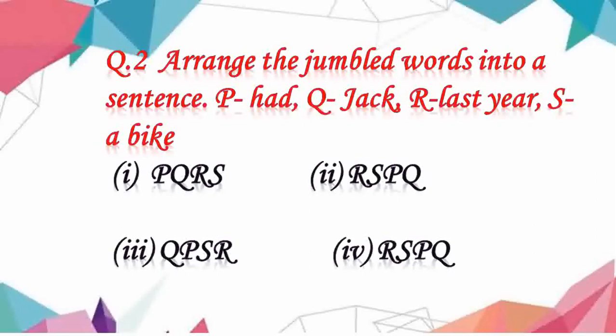Question number 2: arrange the jumbled words into a sentence. P: had, Q: for Jack, R: for last year, S: a wife. When we arrange these words, the sentence becomes: Jack had a wife last year. So our answer will be Q, P, S, R.